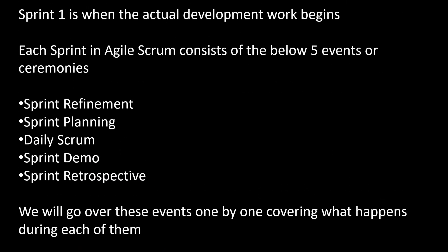Now we continue the story with Sprint 1. Sprint 1 is when the actual development work begins. Each Sprint in Agile Scrum consists of the following 5 events or ceremonies: Sprint Refinement, Sprint Planning, Daily Scrum, Sprint Demo, and Sprint Retrospective. We will go over these events one by one, covering what happens during each of them.